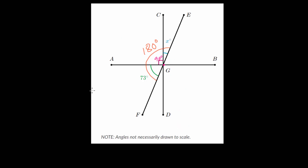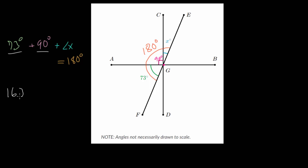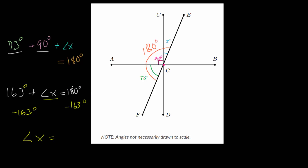We can set up an equation: the right angle is 90 degrees, so we have 73 degrees plus 90 degrees plus angle x equals 180 degrees. Combining like terms: 90 plus 73 is 163, so 163 plus x equals 180. Subtracting 163 from each side, angle x equals 17 degrees.